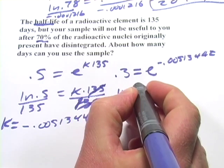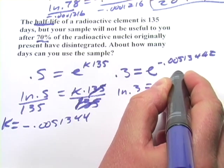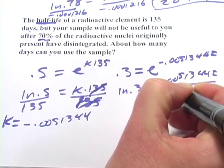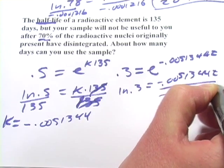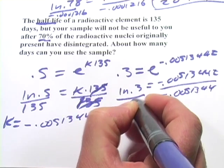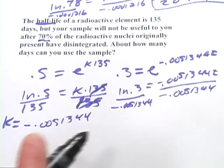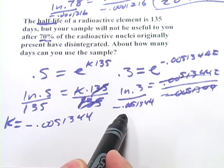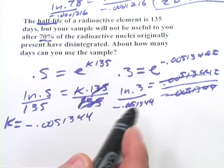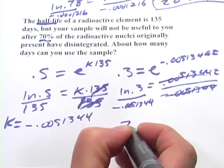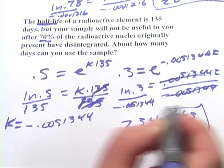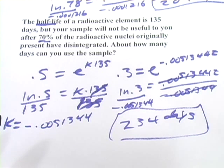Take the natural log of both sides. Divide here. And if you crunch that out on your calculator, the natural log of 0.3 divided by negative 0.051344, I think you're going to get something like 234 days and some change. So we'll call it 234 days. So that is a little work with radioactive decay.